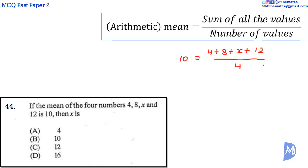So, we are going to solve for x. We multiply both sides by 4. 10 by 4 is 40. And when we multiply by 4 on the right-hand side, the 4s would cancel to remain with just 4 plus 8 plus x plus 12.